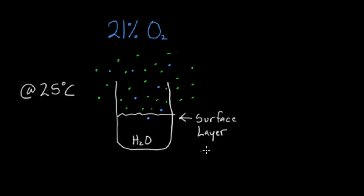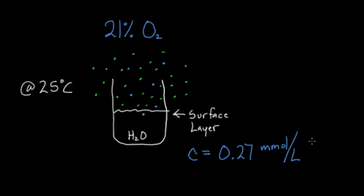In fact, if I measured it, I could say the concentration, C, the concentration at that level is 0.27 millimoles per liter. And this number is literally just something that I would have to measure. I would actually measure the concentration there. And that's the measure of oxygen.